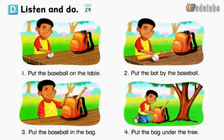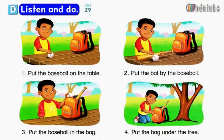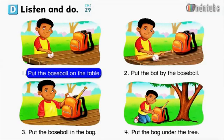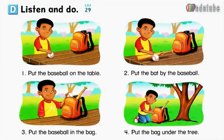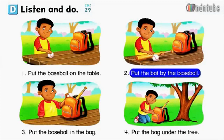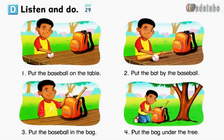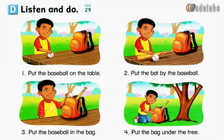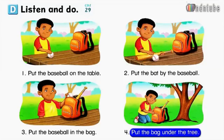Page 53. D. Listen and do. Number 1: put the baseball on the table. Number 2: put the bat by the baseball. Number 3: put the baseball in the bag. Number 4: put the bag under the tree.